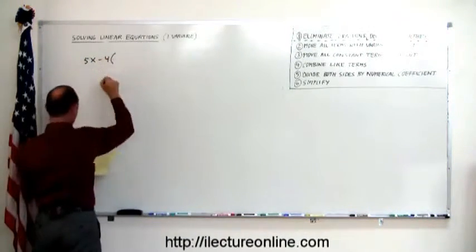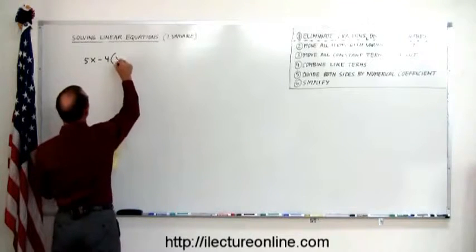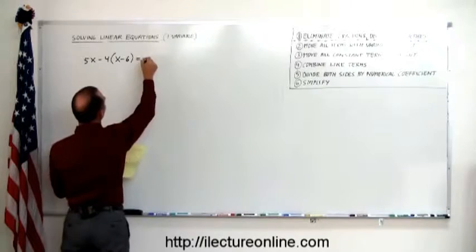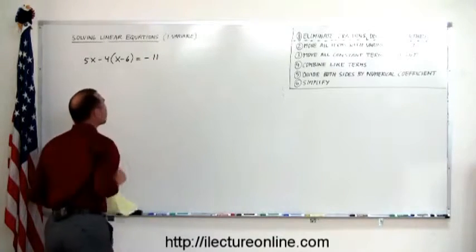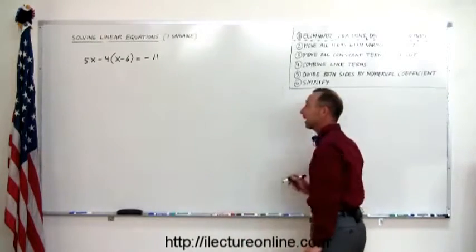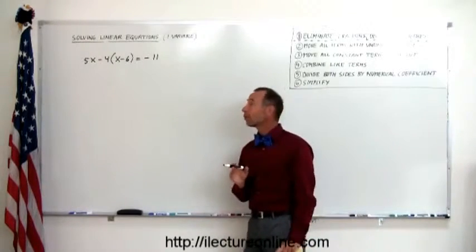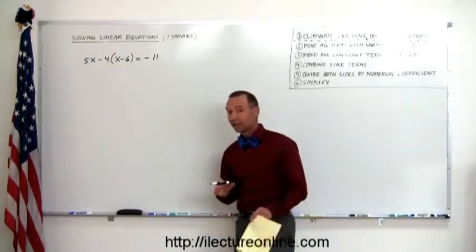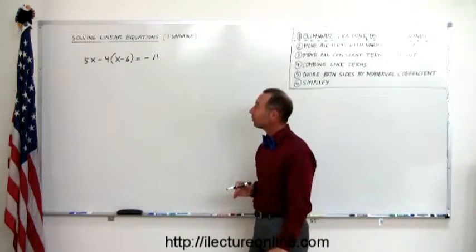5x minus 4 times x minus 6 is equal to minus 11. We have parentheses, and whenever you have parentheses, you probably want to get rid of those first. If you have a combination of parentheses, fractions, decimals, I would say go after those parentheses first.